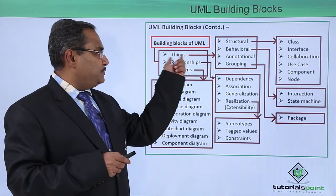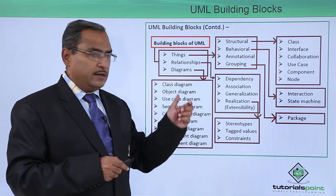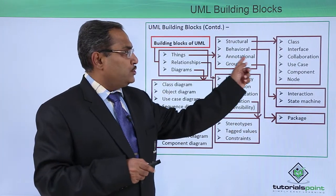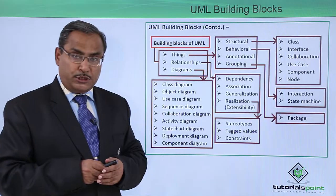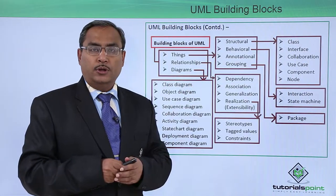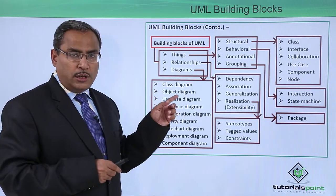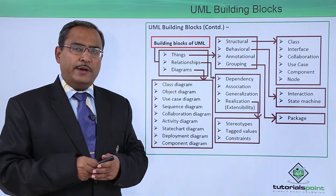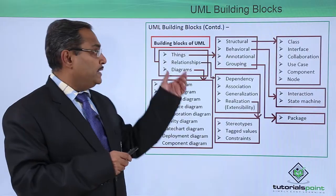Now let us come to the first building block: things. Things are of four types — structural, behavioral, annotational, and grouping. Under grouping, we have only package. Under annotational, we have notes. Behavioral includes interaction and state machine. Under structural, we have class, interface, collaboration, use case, component, and node. Nodes are also used in the deployment diagram. These are the three building blocks and their respective categorizations.